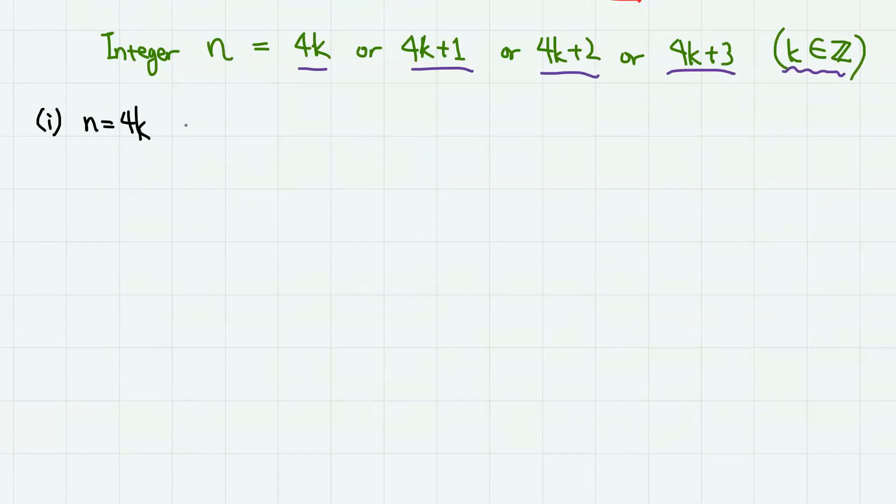So for the first case, if n = 4k, then n² = 16k², which is 4 times 4k². Therefore, if we divide n² with 4, it gives remainder 0.